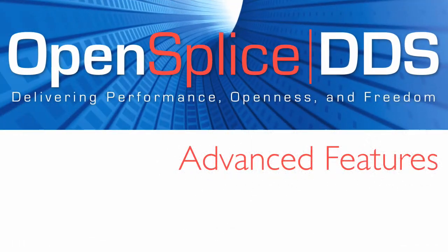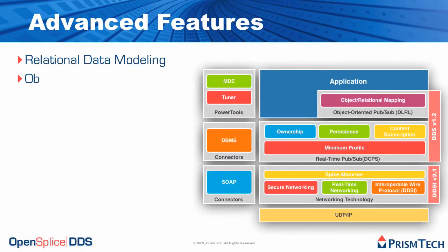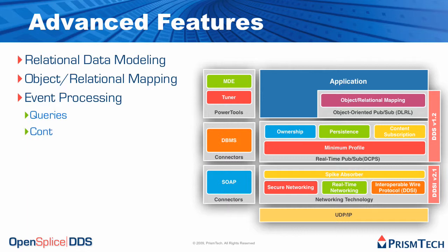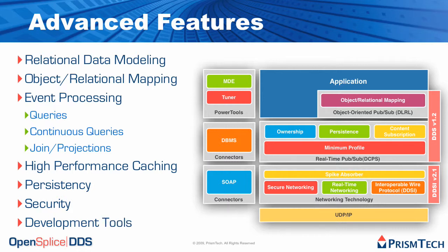OpenSplice DDS also provides a set of very advanced features that really make it stand out when compared to traditional or plain messaging technologies. Some of the most interesting features relate to its facility for distributed data modeling and object-relational mapping, which allows you to create arbitrary object reconstruction out of a distributed relational data model. It supports event and stream processing, so you can do local queries, continuous queries, and join and projection of the topics you are subscribing. It provides high-performance caching, data persistency, data security, and a wide set of connectors and development tools.